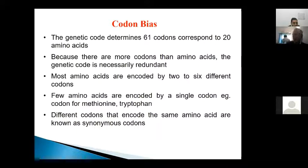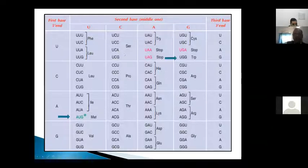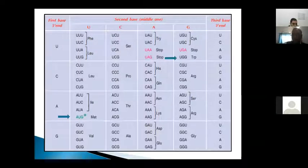Codons coding for similar amino acids are called synonymous codons. The key point is that one organism may use one codon while another organism uses a different codon for the same amino acid. For example, glycine has four codons and serine has six codons, so different organisms may use different codons — UCT, UCA, etc. — for the same amino acid. There is a difference in codon usage across different species.